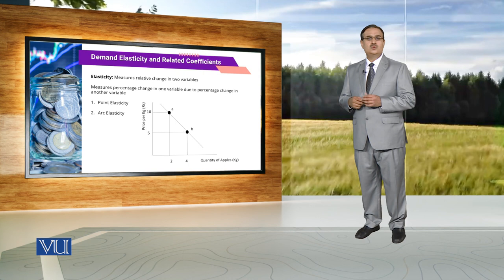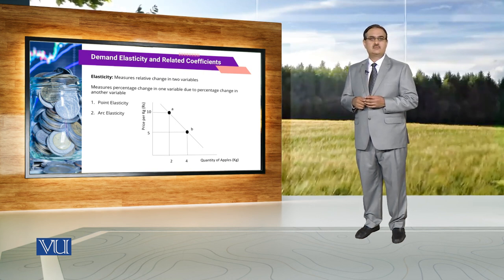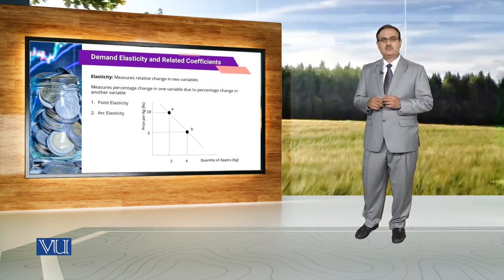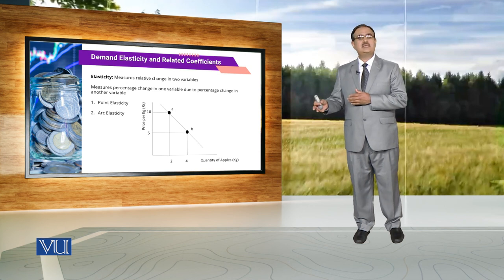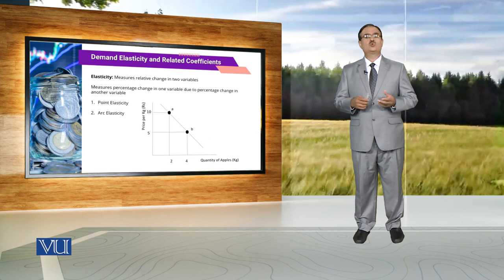When we talk about elasticity, it measures relative change in two variables — the percentage change in one variable due to percentage change in another variable. For example, percentage change in quantity demanded because of percentage change in price, percentage change in quantity demanded because of percentage change in income, or percentage change in quantity demanded because of percentage change in price of commodity B.